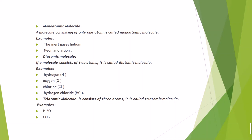Triatomic molecules consist of three atoms. For example, water (H₂O) is formed by the combination of two hydrogen atoms and one oxygen atom — making it a triatomic molecule. Similarly, carbon dioxide (CO₂) has one carbon atom and two oxygen atoms, so it is also a triatomic molecule.